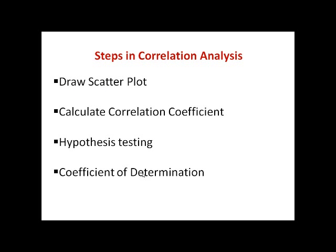There are four steps in calculating correlation analysis. The first is to draw a scatter plot, which gives a graphical presentation of the movement of two variables X and Y. The second is to calculate the correlation coefficient, and the third is hypothesis determination. We will see how to calculate all of this using SPSS.